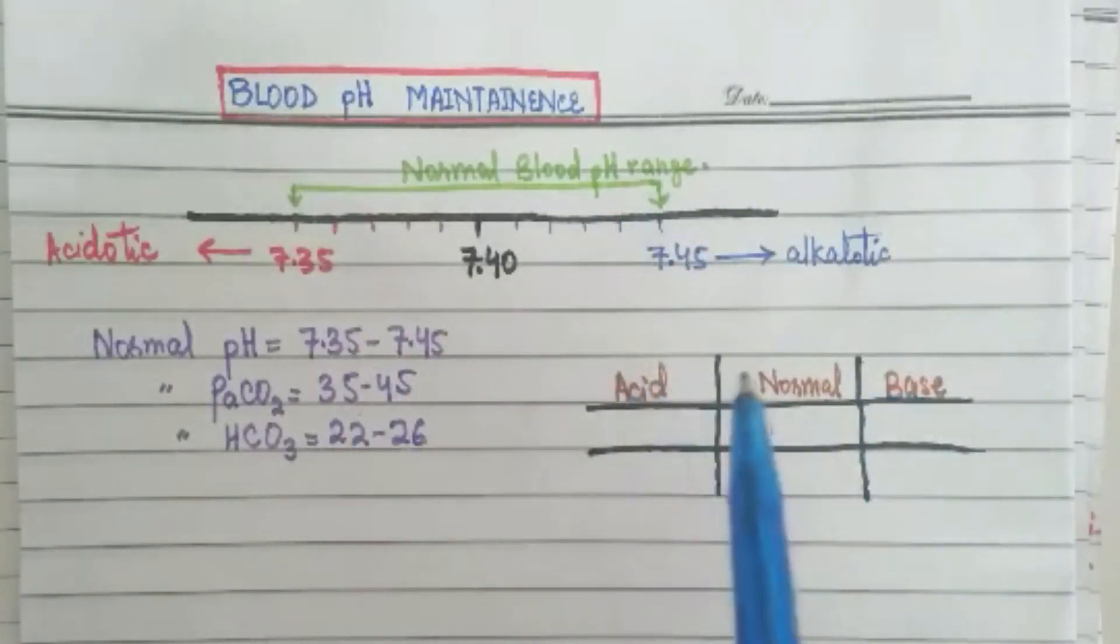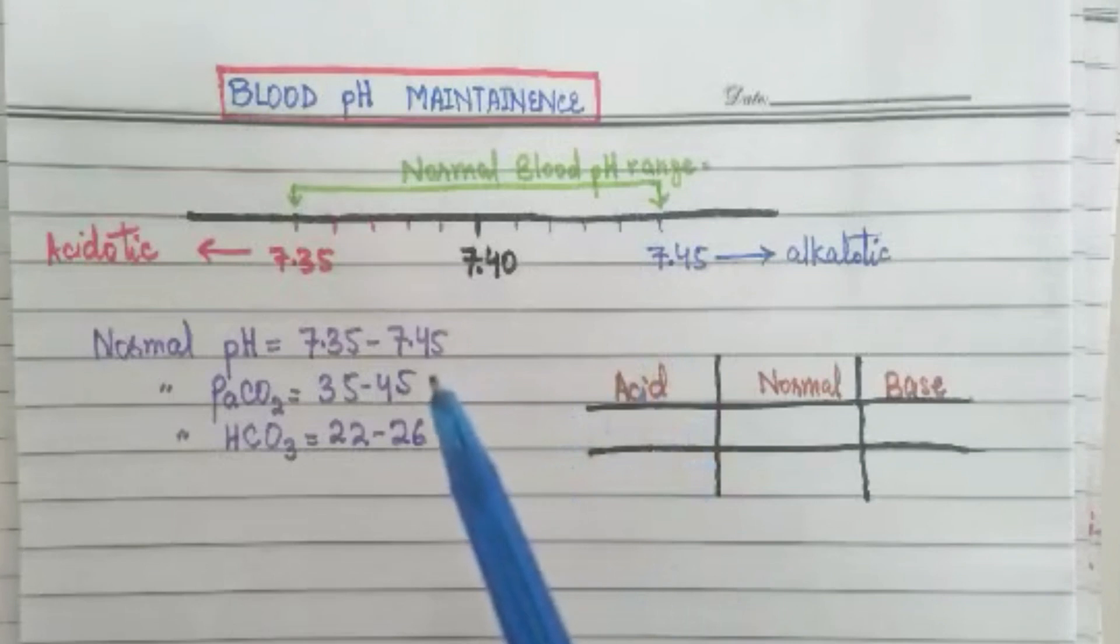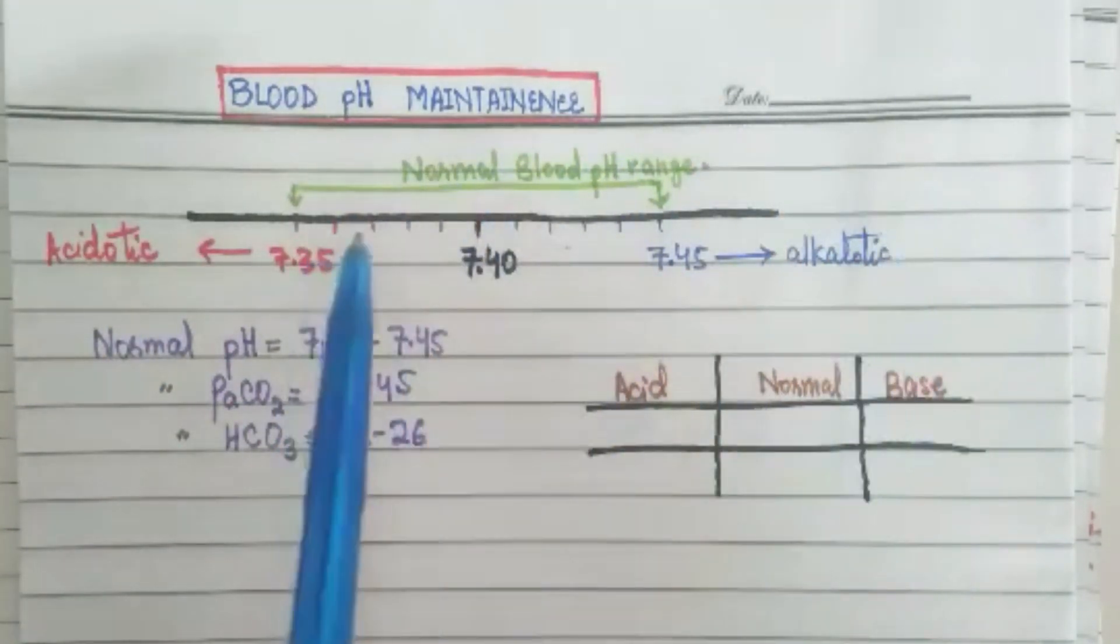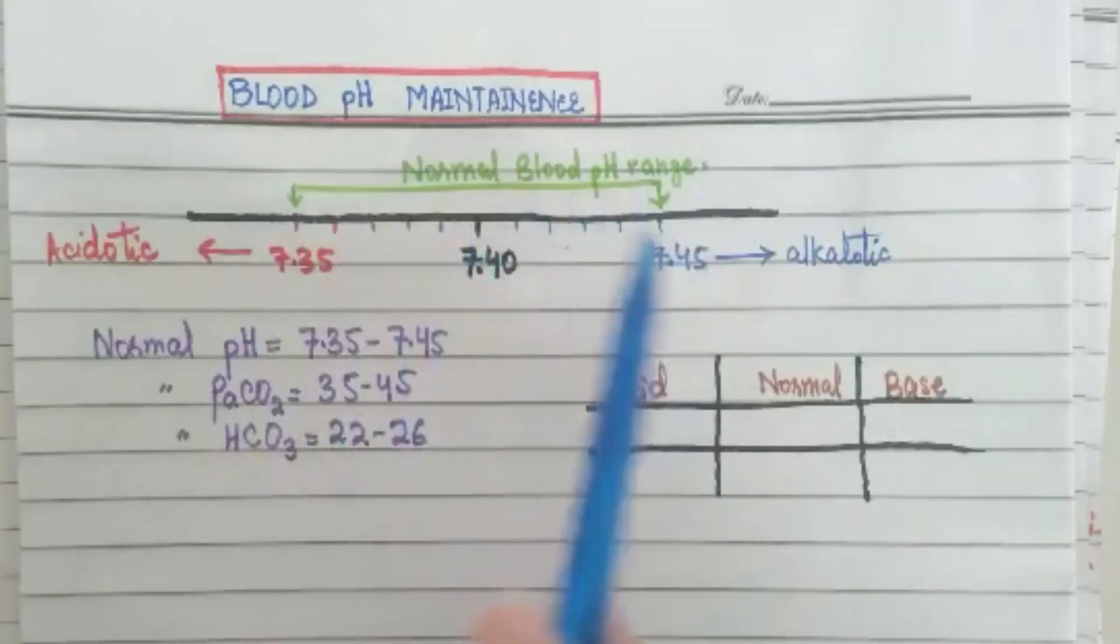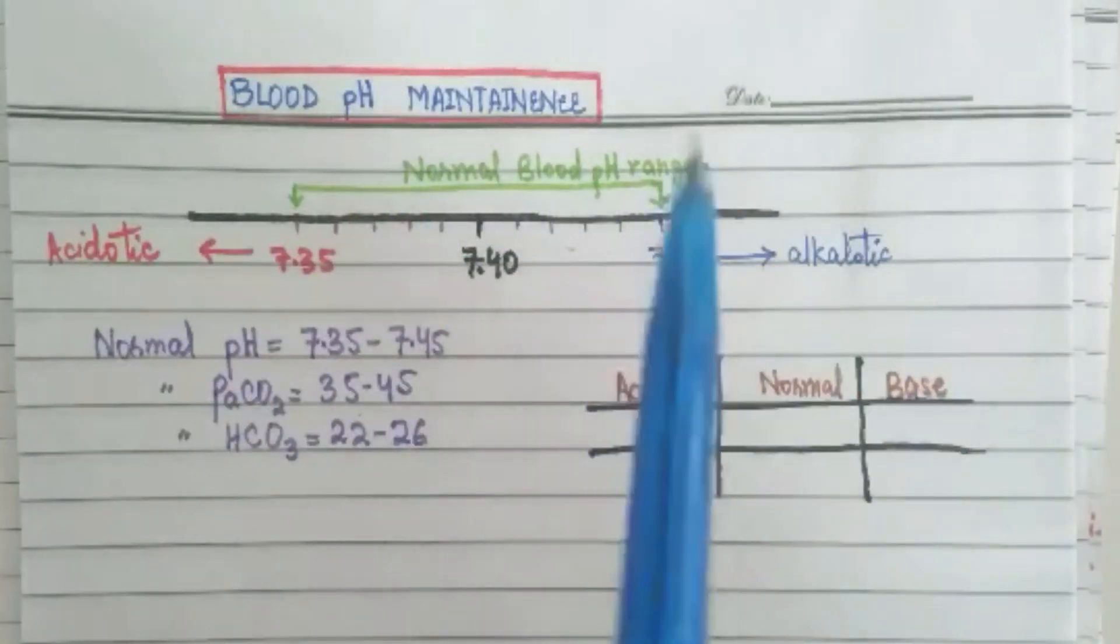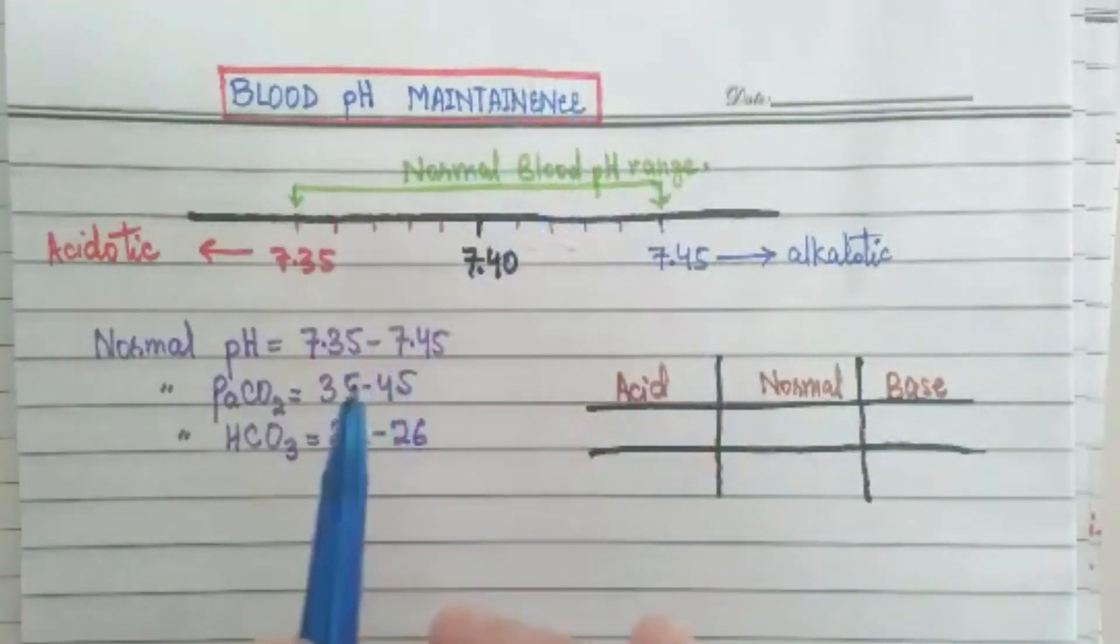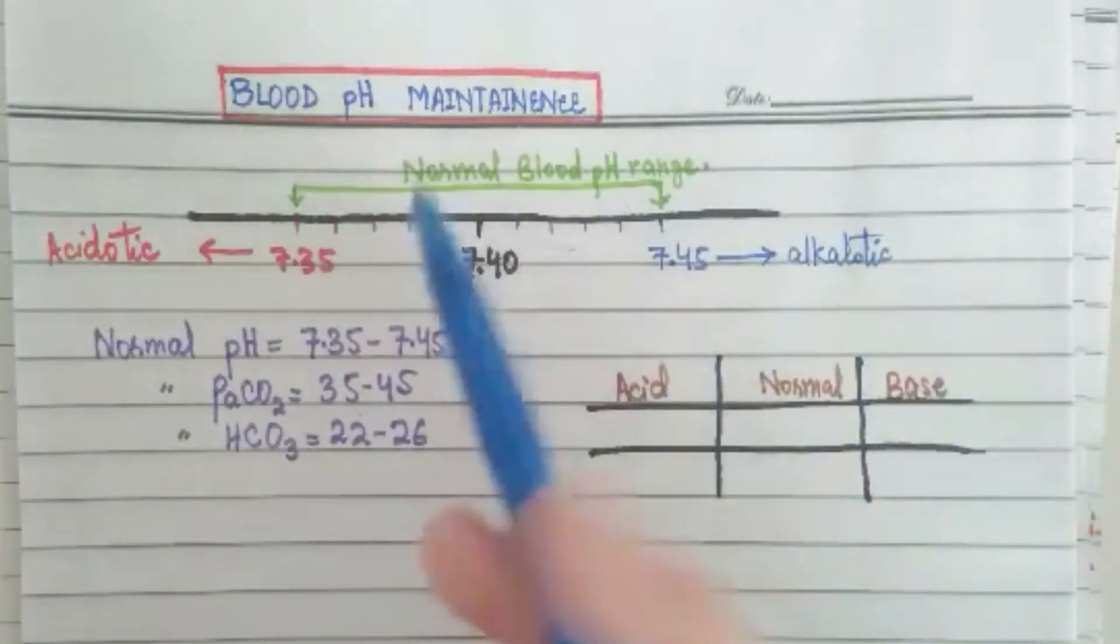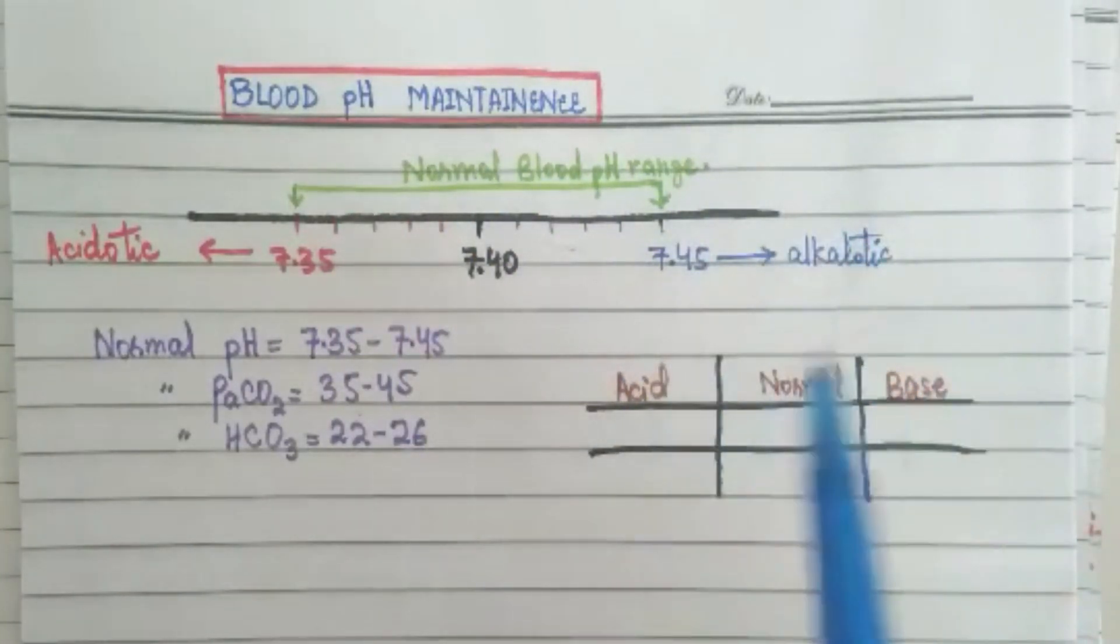We will see arterial blood gases interpretations and this is very important as it comes in exams. You will understand this properly. When you go to clinical clinic in the future it will help you. So how does it compensate and how do we evaluate it?